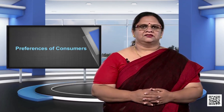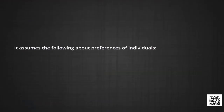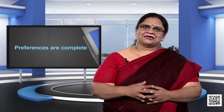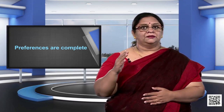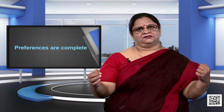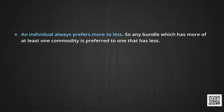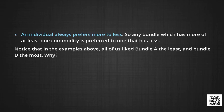Indifference curve theory uses these intuitive ideas to analyze a consumer's preferences. It assumes the following about the preferences of consumers. One, an individual is able to rank all bundles in order of preference — economists often state this as preferences are complete. So I may like some bundles more than others and some bundles as much as others, but I can always draw up a complete ranking. Two, an individual always prefers more to less — any bundle which has more of at least one commodity is preferred to one that has less. Notice that in the examples we took, all of us liked bundle A the least and bundle D the most.